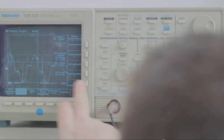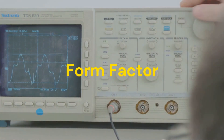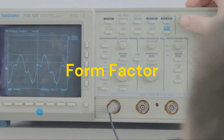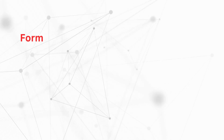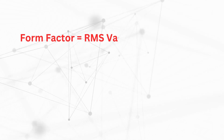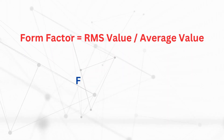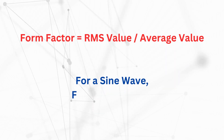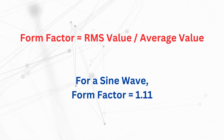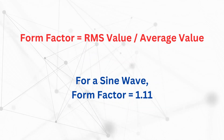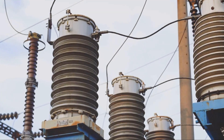One common theory attributes the 11 kV pattern to the form factor, a mathematical concept. The form factor is the ratio of the root mean square of a waveform to its absolute average value. For a sinusoidal wave, it is 1.11. It's a nifty mathematical concept indeed, but when it comes to voltage selection in power systems, it doesn't quite fit the bill.